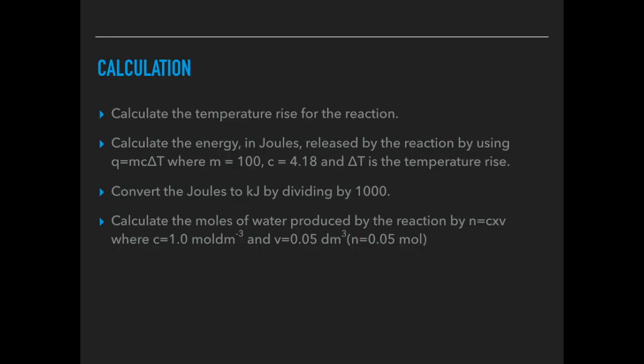You'd then calculate the moles of water produced by the reaction using N equals C times V. If you remember, I chose the same volume and concentration of acid and alkali. That's because they're reacting in a one to one ratio in this reaction. The moles of water will also be the same therefore as the moles of acid and the moles of alkali. In this case, we use 1.0 mol per dm cubed acid and alkali, 0.05 dm cubed acid and alkali. So the moles of water is going to be 0.05.